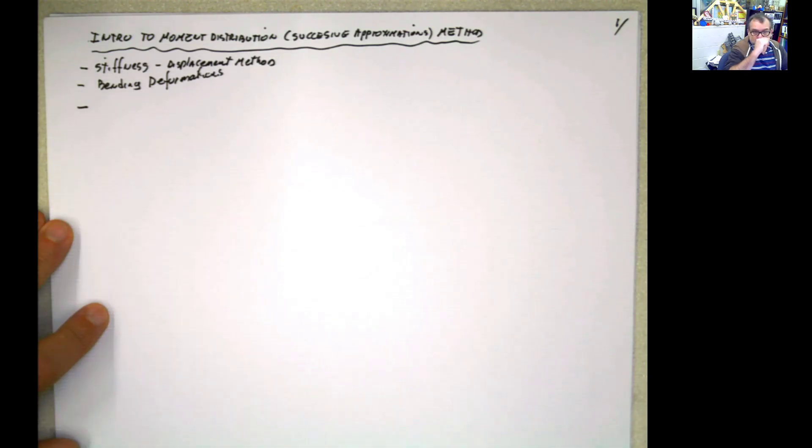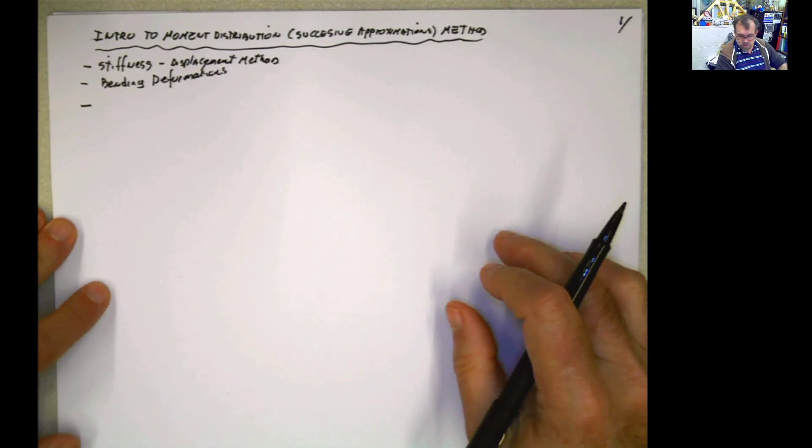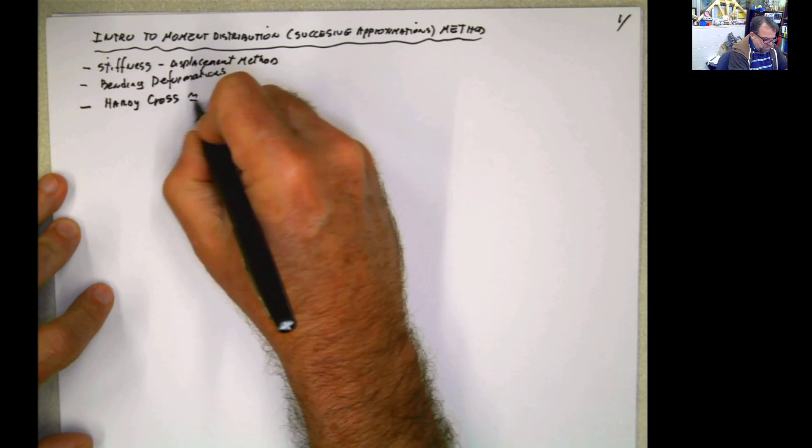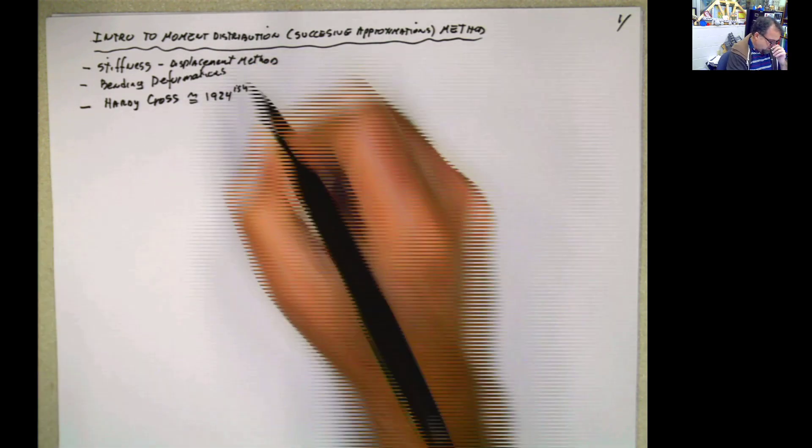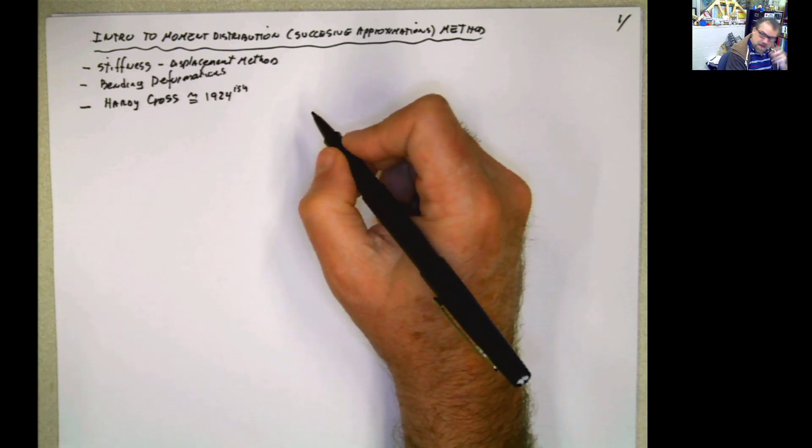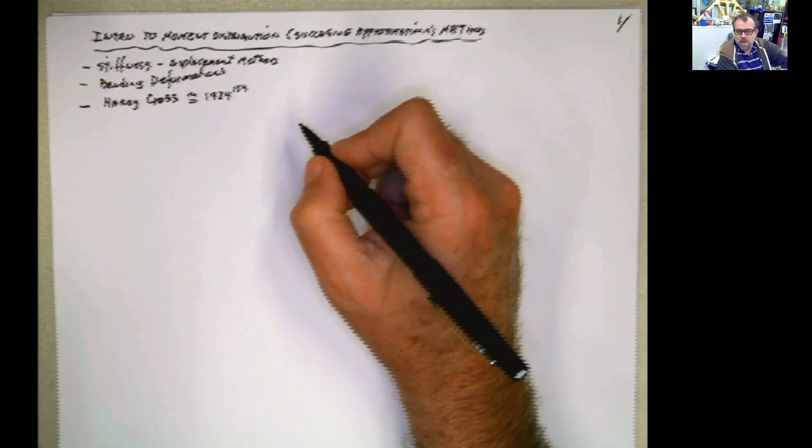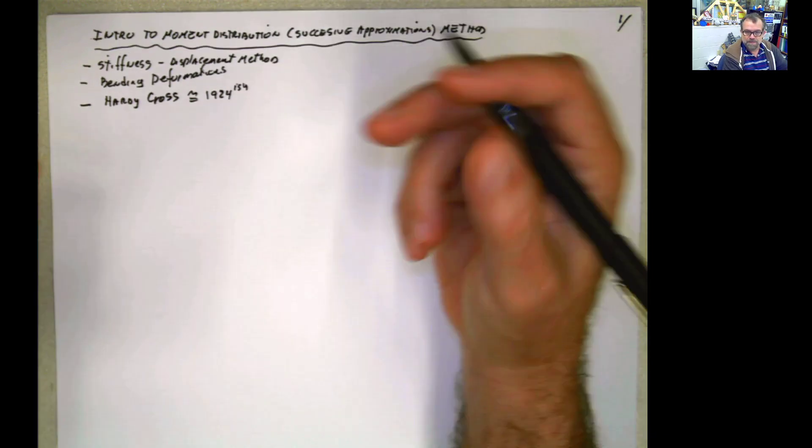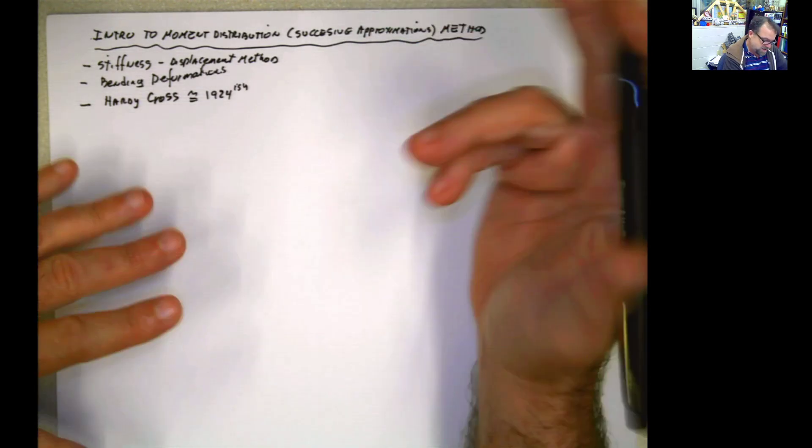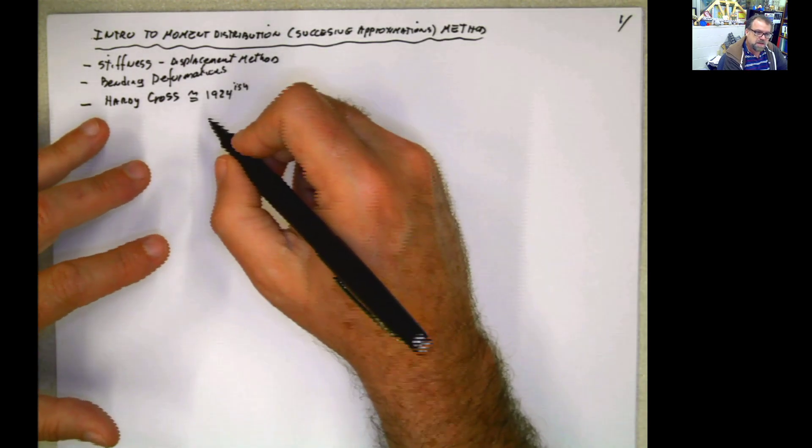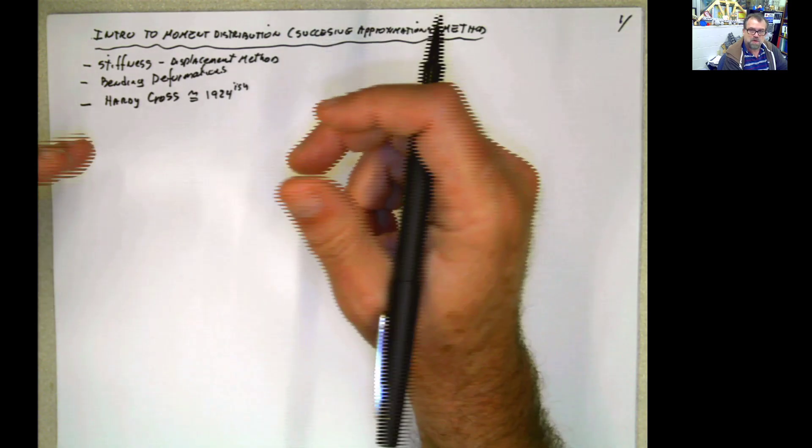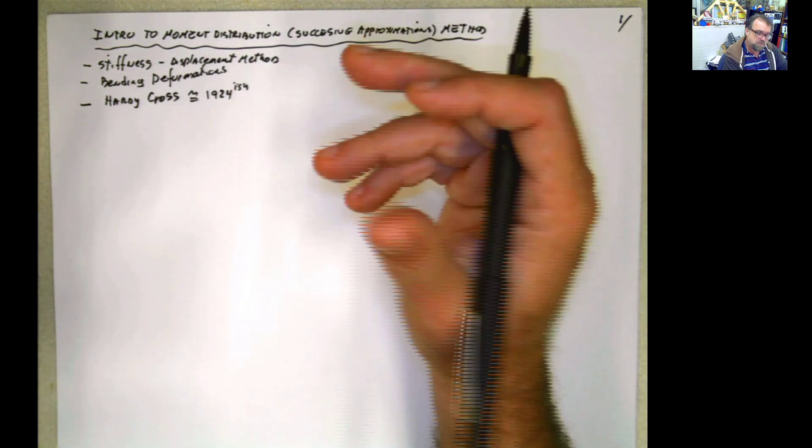This method was devised originally by Hardy Cross around 1924. And it was super important and cool. But when the computers came in the 60s, actually, but let's say 70s, then this method started transforming using slope deflection for a more computerized problem that follows a matrix approach system.